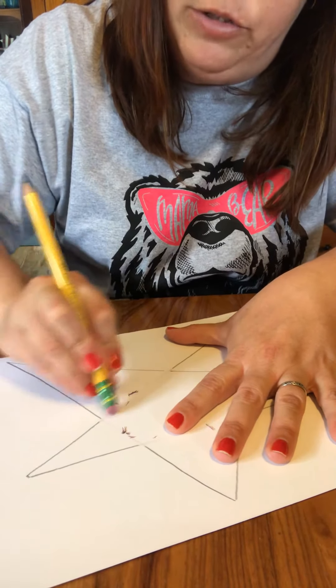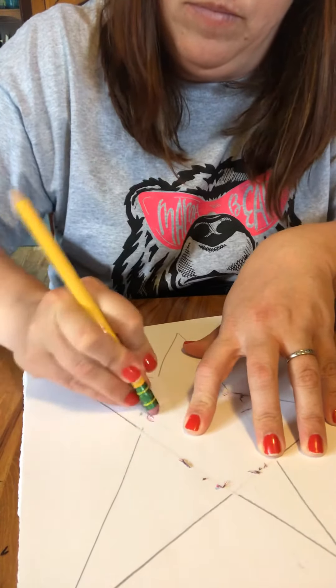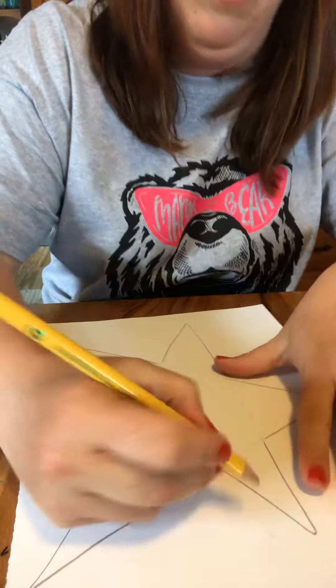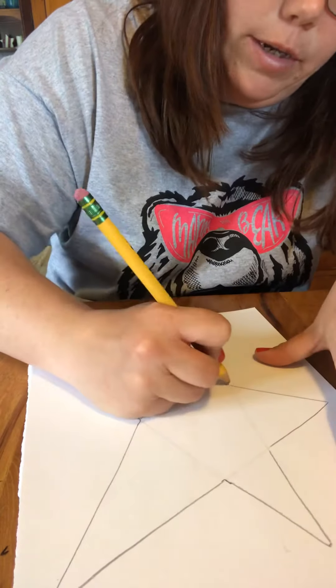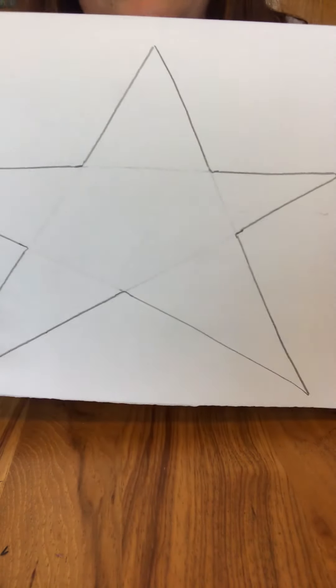Plus this way you'll just see the outline of your star. And then if you've accidentally erased any of your edge lines you can fix those. There you go. So you want to erase out those middle lines.